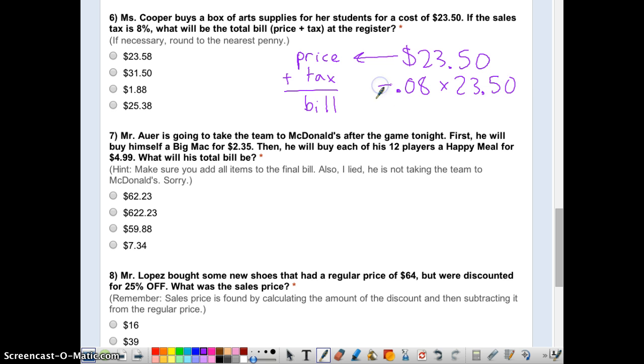And whatever that is, I need to add it to 23.50. We're adding the tax. So I have 1, 2, 3, 4 digits. This comes out to be 1880. I get 1, 2, 3, 4 digits to the right. I get $1.88. So I do 23.50 plus 1.88, and I end up with D, 25.38.